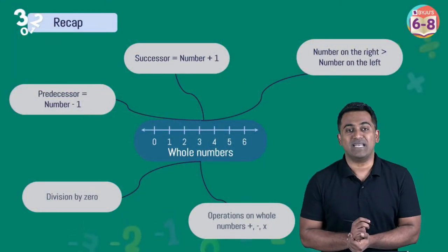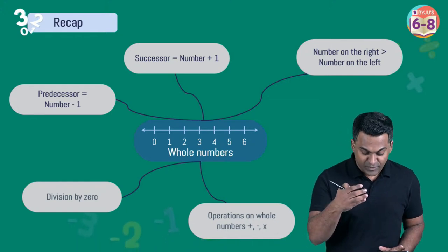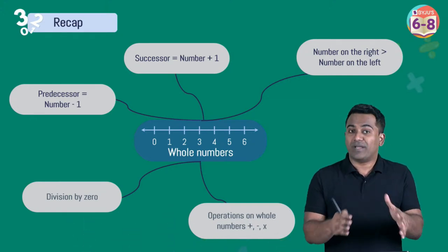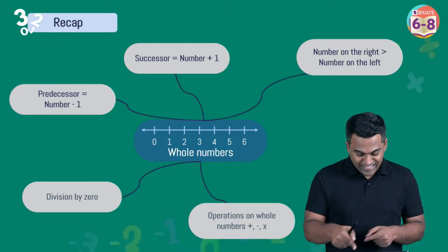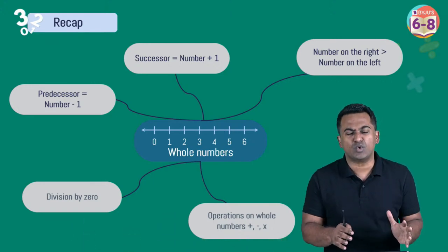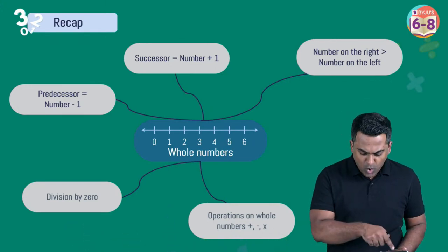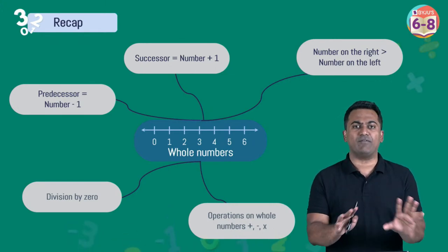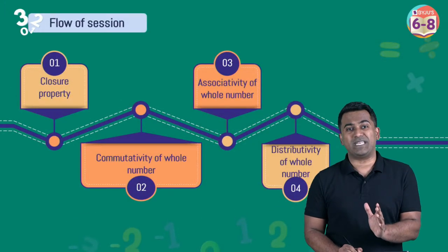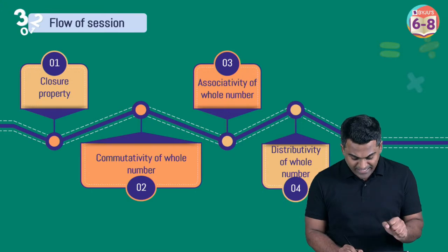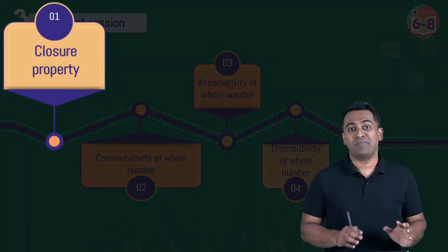Last time we covered what a predecessor is, what a successor is, the number line — move to the right, move to the left — and operations on whole numbers. We also understood that division by zero is not defined in mathematics. Today let's start with the properties of whole numbers.